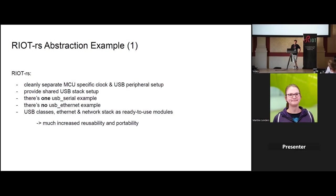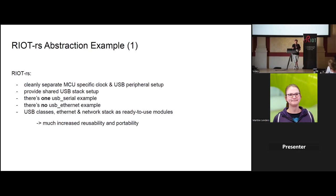What we do in RIOT-rs: we take all these examples, clearly separate out the MCU-specific parts, then provide shared USB stack setup, condensing down to one USB serial example. We make the whole USB stack like a set of modules that can be easily used with a lot less boilerplate for increased reusability and portability. The USB Ethernet example is gone because USB Ethernet is just one configuration option for the basic TCP networking example - just enable it, and it's there if your board supports it. No boilerplate needed.